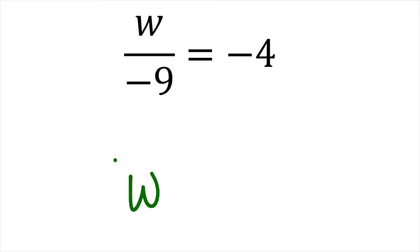Which really means I want one there. Well, w divided by negative nine, if I wanted a one there, I would simply multiply that by negative nine.